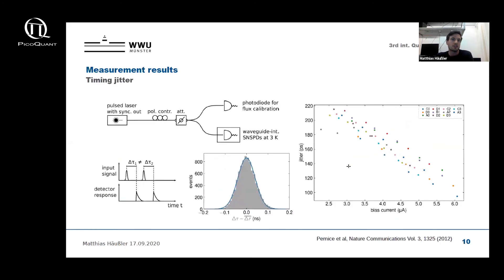In addition to the efficiency, we also characterize the timing accuracy of our detectors. For this we switch our CW laser for a pulsed laser with synchronization output port. In order to measure the timing accuracy, we measure the time difference between the pulse and the response signal of the SNSPD. If we repeatedly measure this time difference and plot the result in a histogram, we find that the detector response varies with a Gaussian distribution around a mean value. The full width at half maximum of this histogram is the timing accuracy or the jitter of our detectors. On the right side we plot the jitter for the individual detectors of the array at different bias currents of the detector.